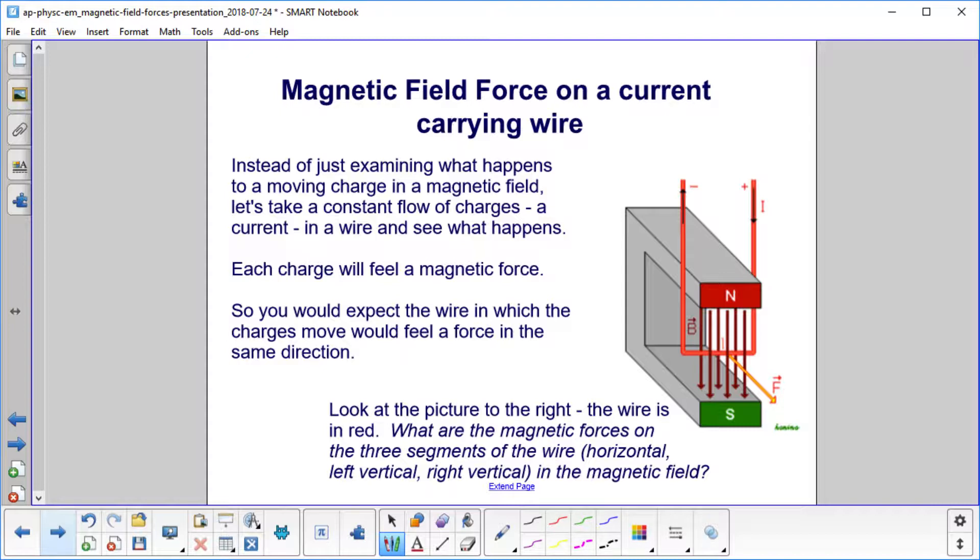Check this picture out. The wire is in red. It comes down like this, makes a little loop, comes back out, and it's connected to something over here too, probably a battery, because you have a current going through. What would be the magnetic forces on the three segments of the wire? We have this segment, this segment, and this horizontal piece down here.